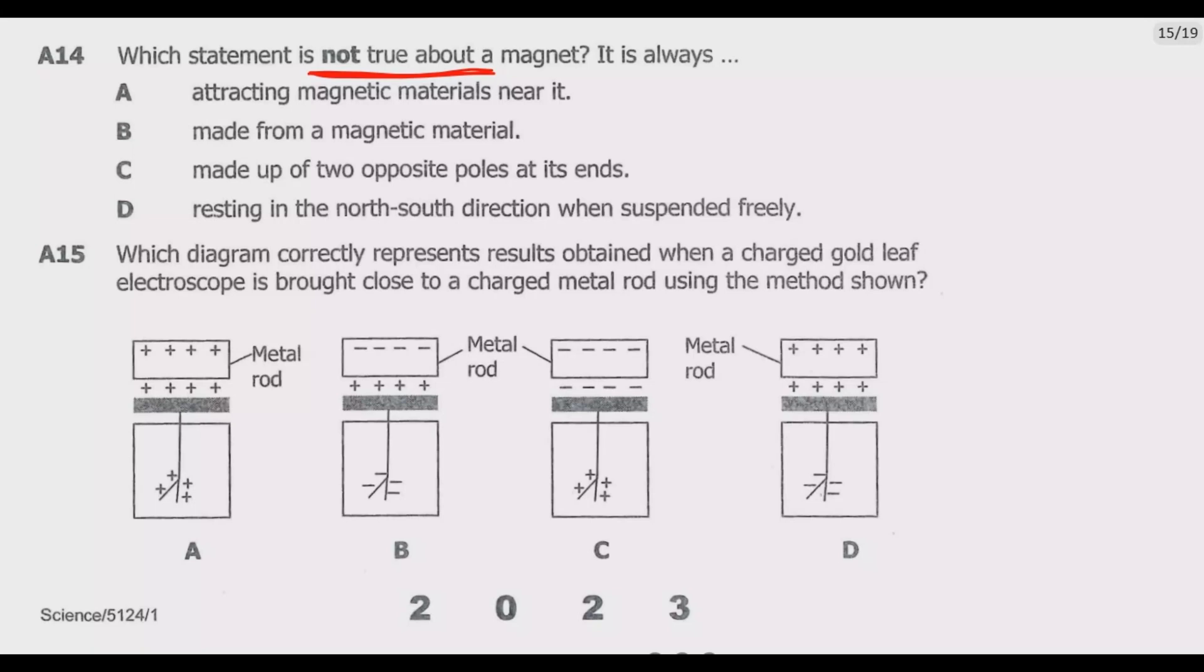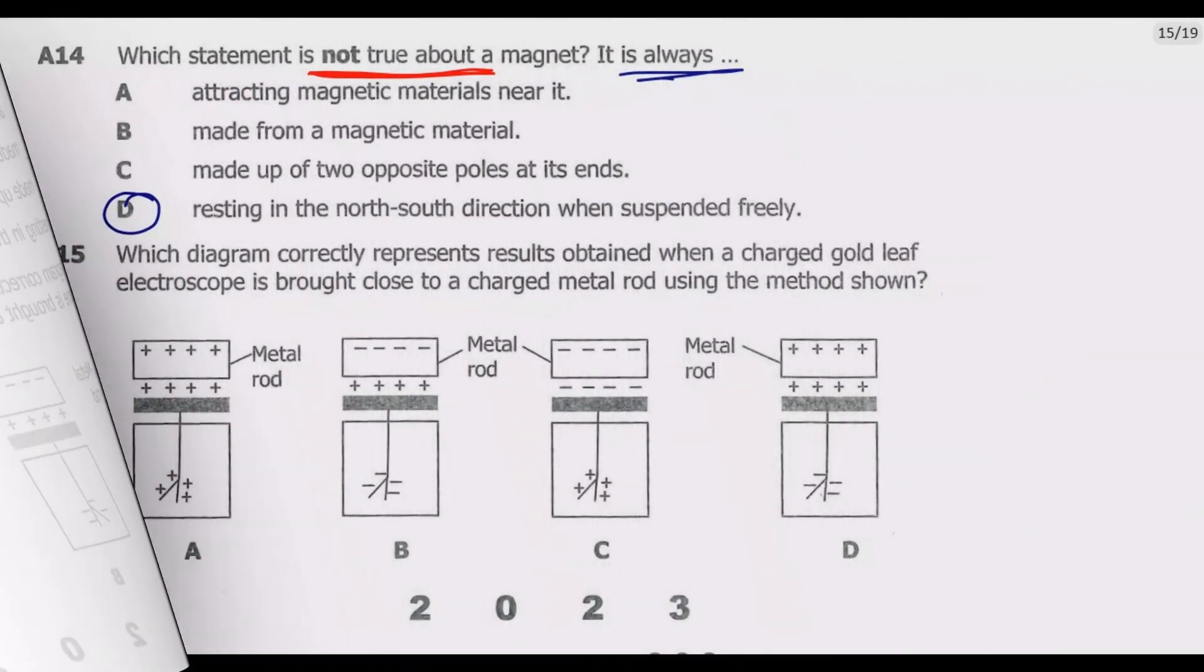D, resting in the north-south direction when suspended freely. Though this statement might be true, it's not completely true. While it is true that a freely suspended magnet will align itself with the earth's magnetic field, which generally runs from the geographic north pole to the south pole, this does not mean that the magnet will always rest in this direction. If other magnetic or electromagnetic fields are present, this may not always be the case. So because it's not always the case, D is not true.